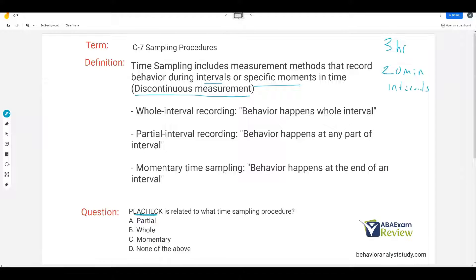Speaking of playcheck, playcheck is related to what time sampling procedure? Well, it isn't partial or whole. Playcheck is simply the group version of momentary time sampling, where you're taking data at the end of each interval. If you have a group of learners or children or clients, each interval at the end you'll look up, see who's engaged, who's not, who's responding, who's not, and take data that way.